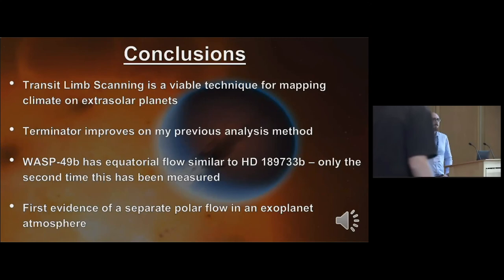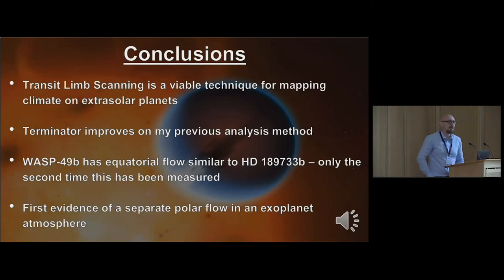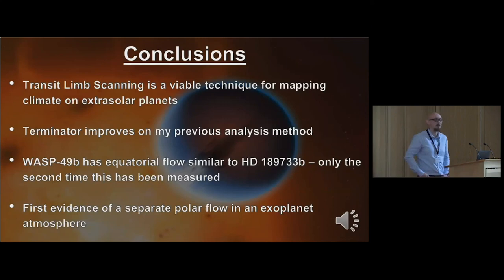Question: What's the lower limit of wind speed that can be detected using these techniques? Response: With the error bars I'm currently getting, you could confidently detect down to about one kilometer per second - any lower is at the limit of current precision. With larger telescopes and new instrumentation like the ELT, you could go a bit lower, but with HARPS, about one kilometer per second is probably the limit.